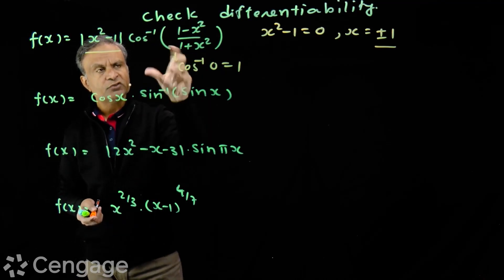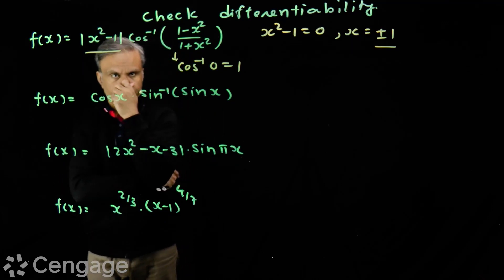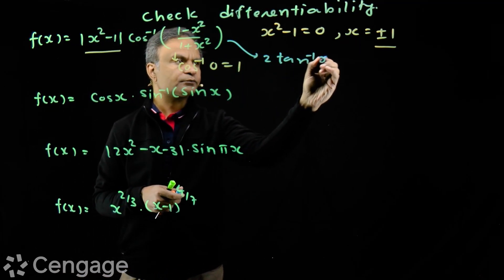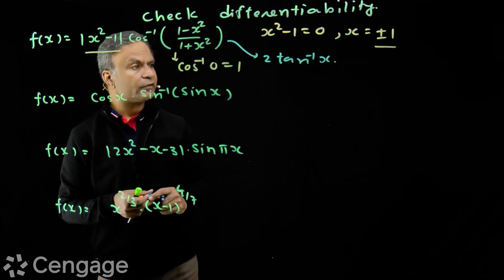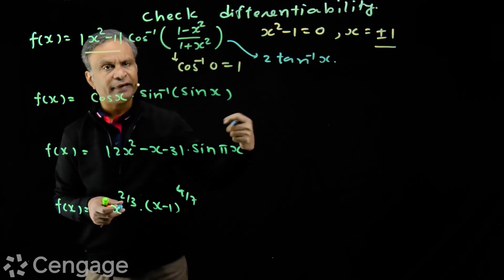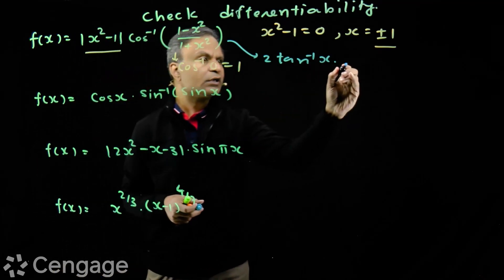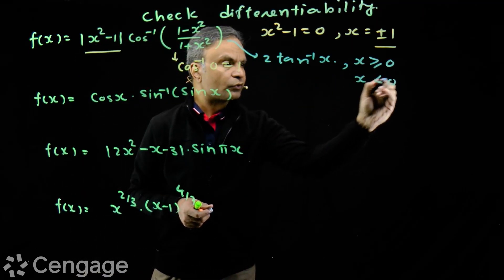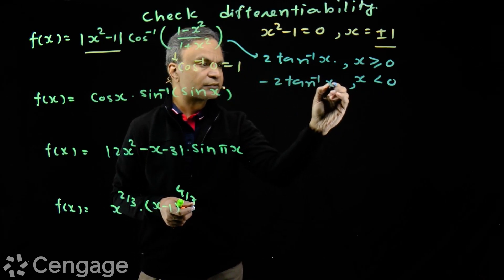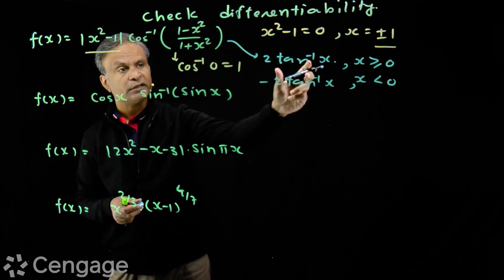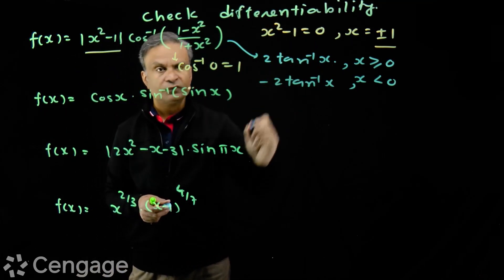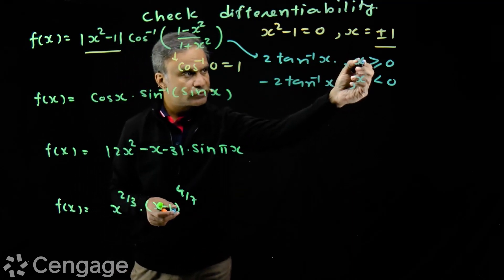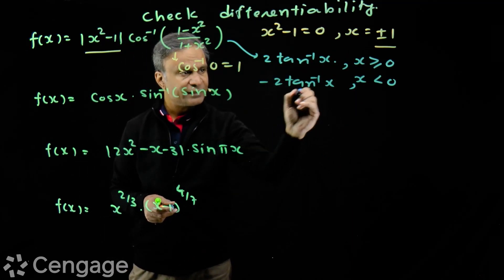Now let's check cos⁻¹((1-x²)/(1+x²)). Some students write this as 2·tan⁻¹(x), but that's not always correct. It equals 2·tan⁻¹(x) only when x ≥ 0. For x < 0, this becomes -2·tan⁻¹(x). Writing it incorrectly as 2·tan⁻¹(x) always would lead you to say the function is differentiable everywhere, which is not the case.